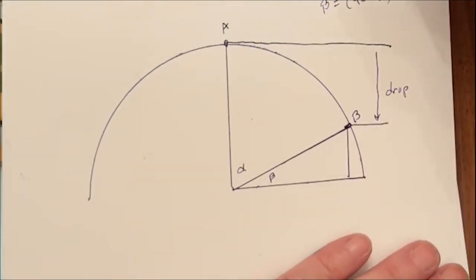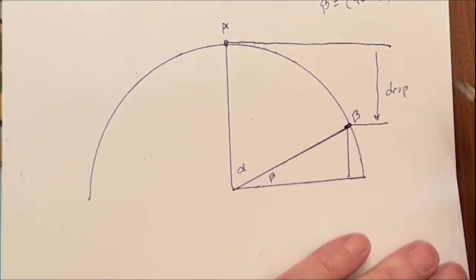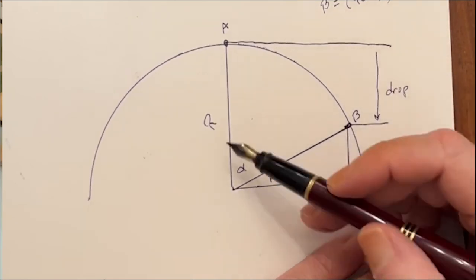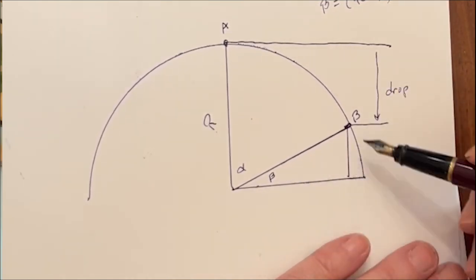Okay, so we've cleaned up our diagram a little bit. Let's do a little bit of basic trig here. So we've got angle alpha and we have angle beta, and we have this drop, and we have the radius of the circle or the sphere. How do we calculate what the drop is? Well, the drop is the radius minus this segment right here. Well, what's that segment?